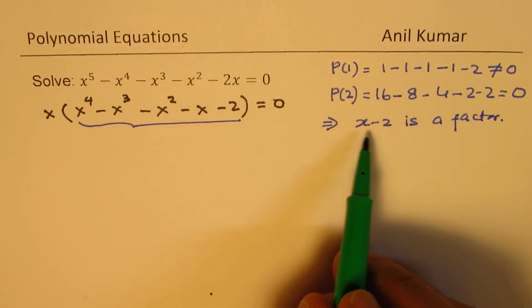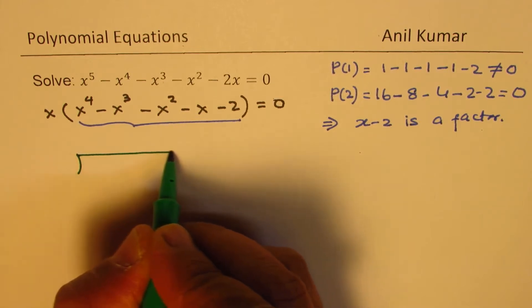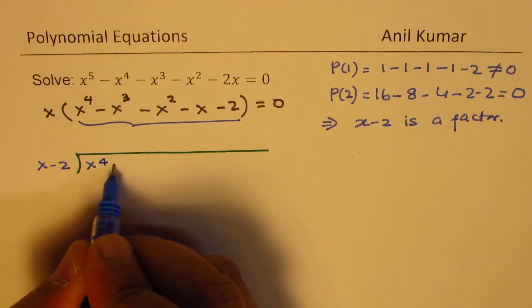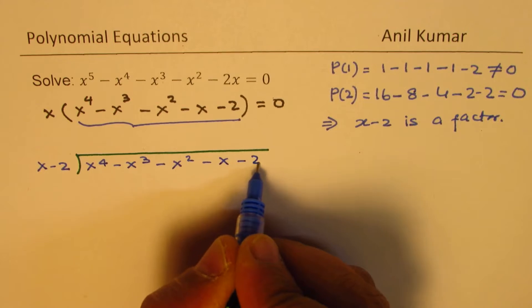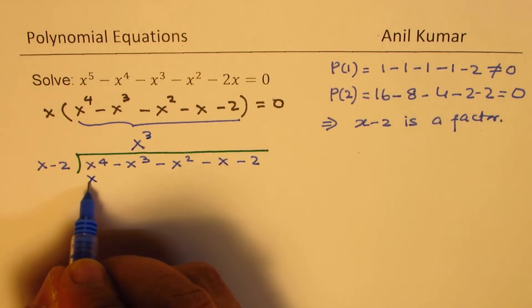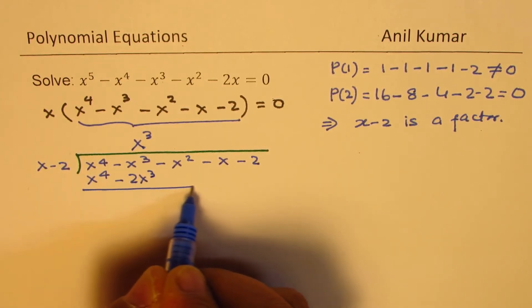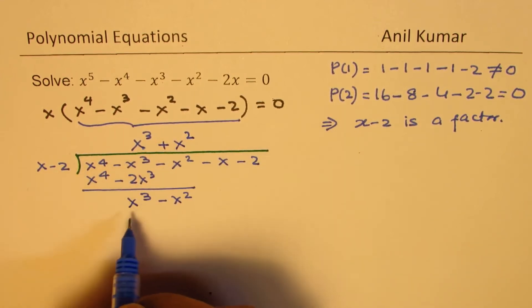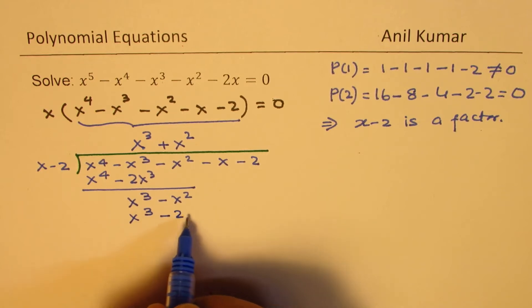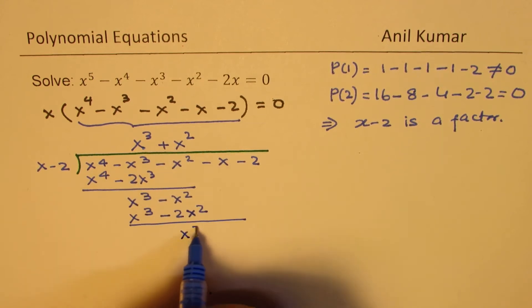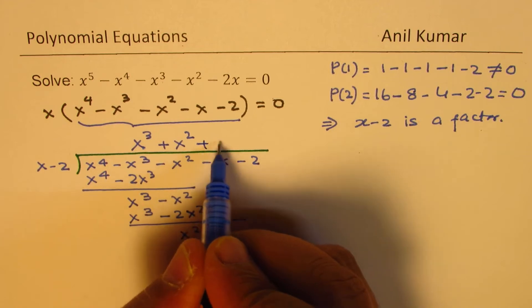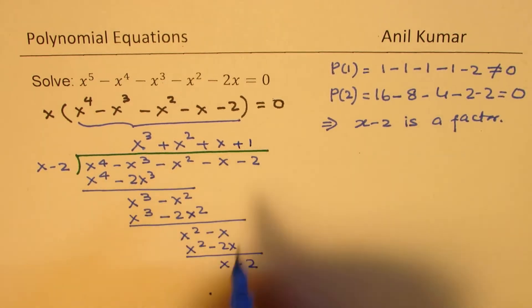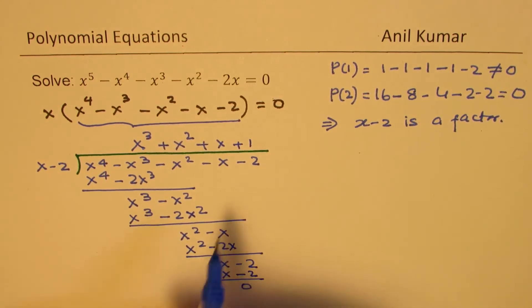So if x minus 2 is a factor, let us divide the quartic equation by x minus 2 and see what we get. We have x to the power of 4 minus x cube minus x square minus x minus 2. Dividing gives x cube, then x cube minus 2x cube, which gives x cube minus x square, then plus x square, giving x cube minus 2x square, then x square minus x, and multiplying by x gives x square minus 2x. That gives x minus 2, so we get plus 1, and the remainder is 0 as expected.